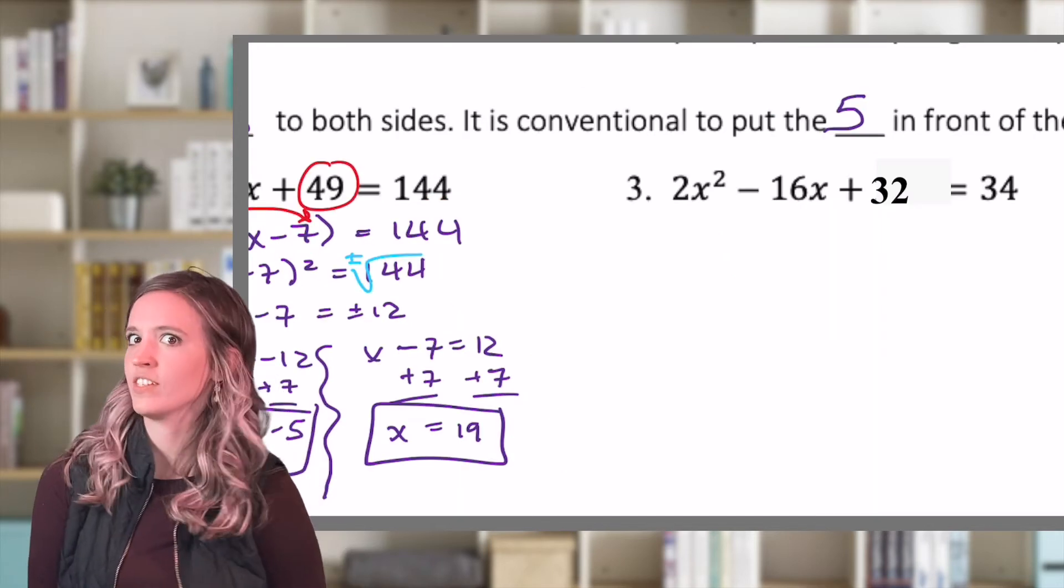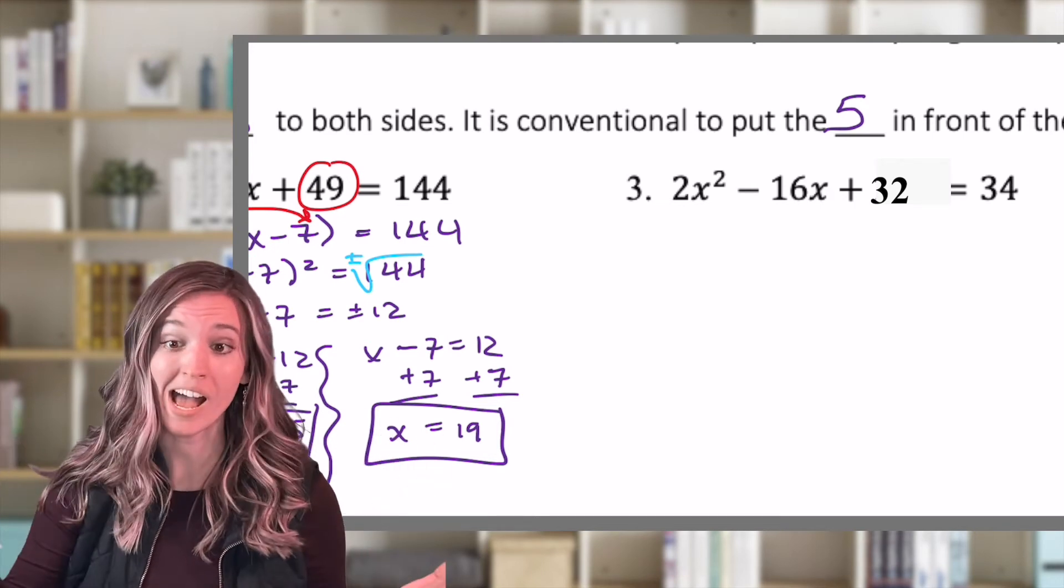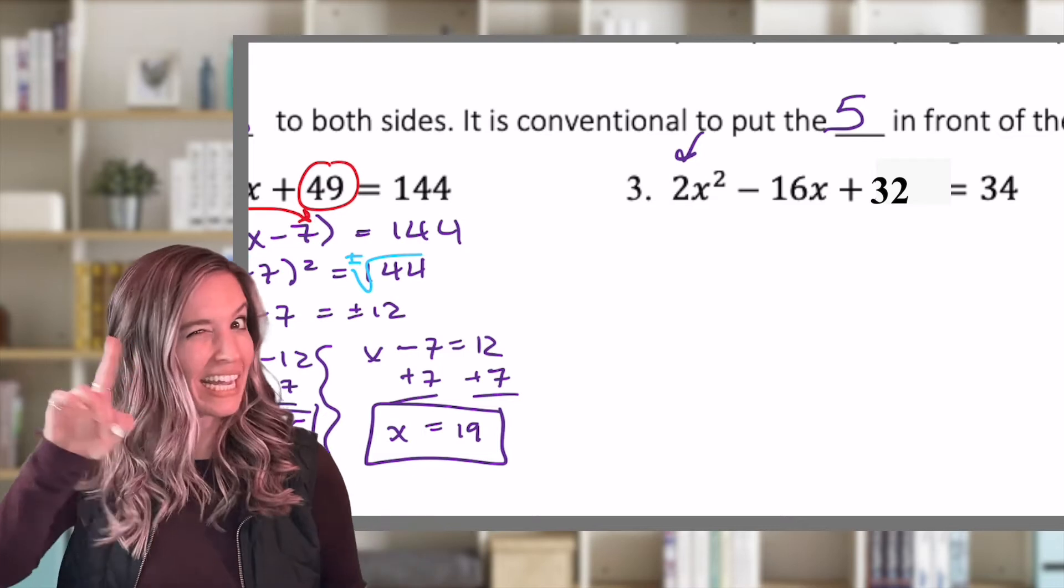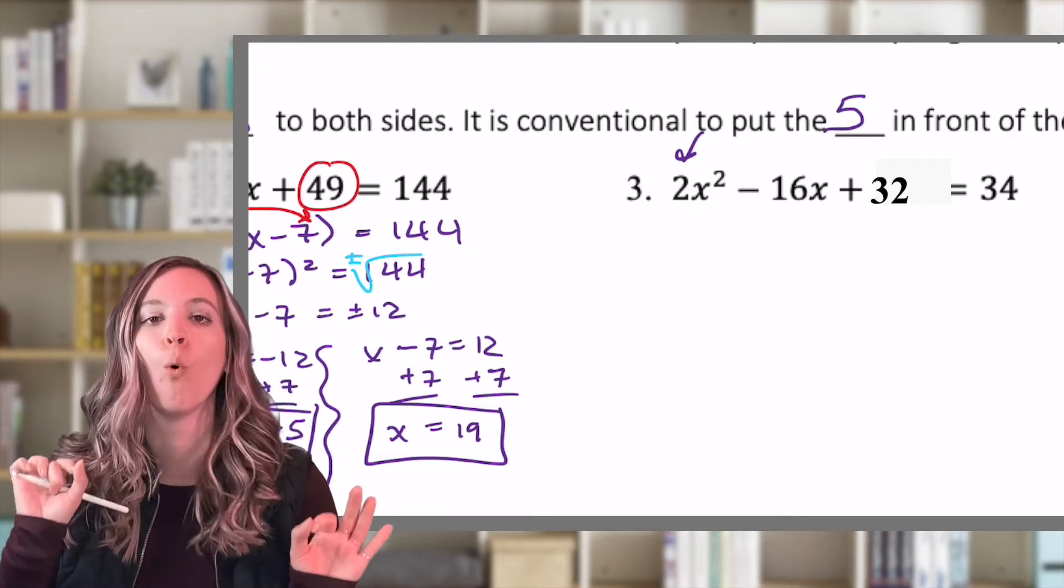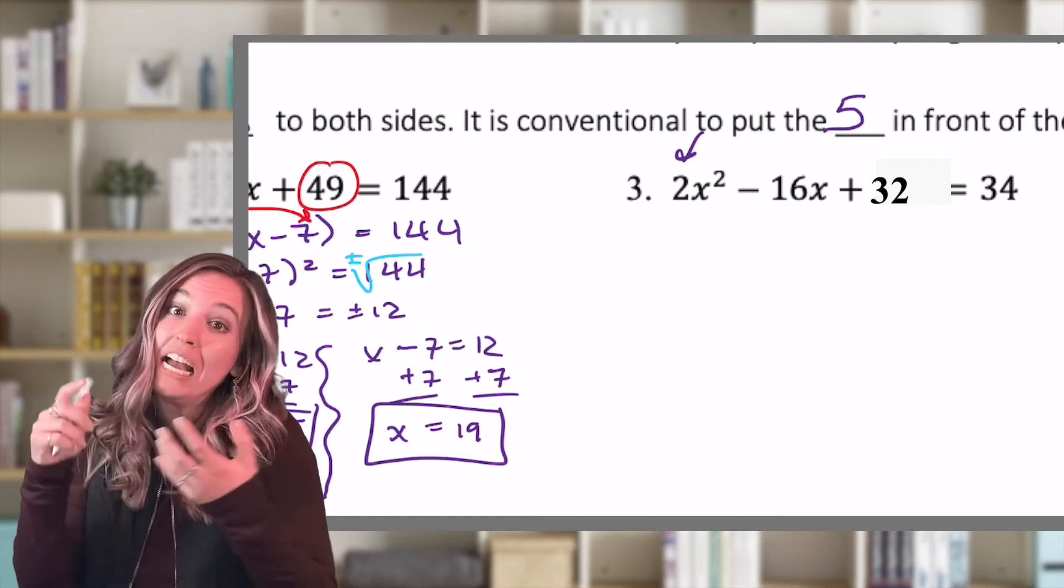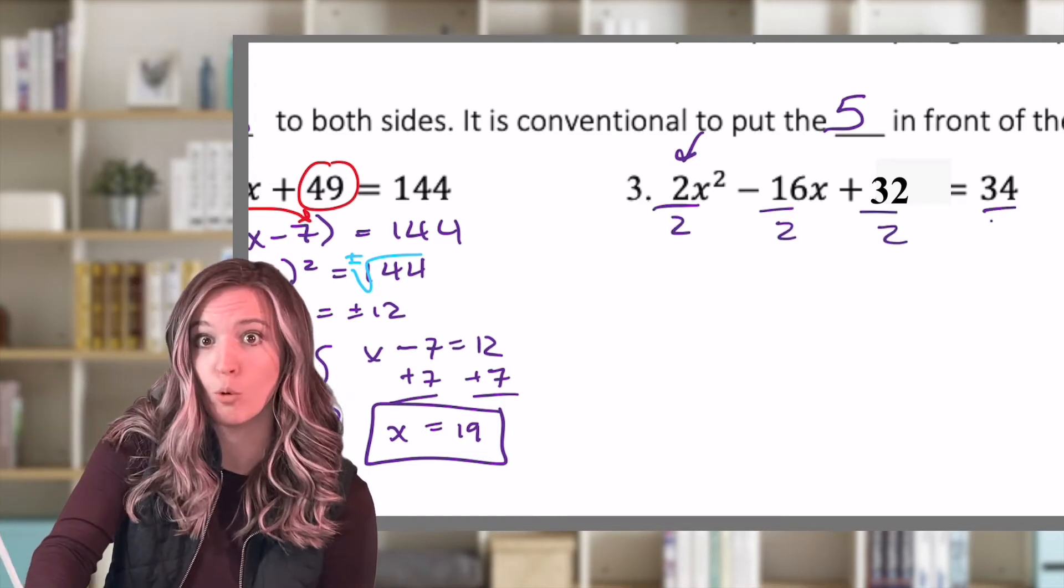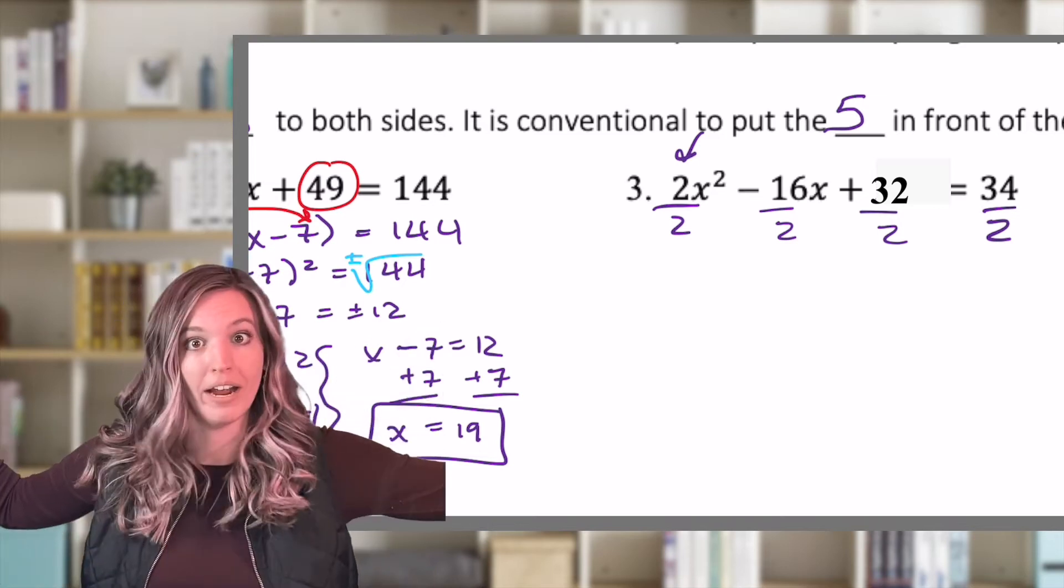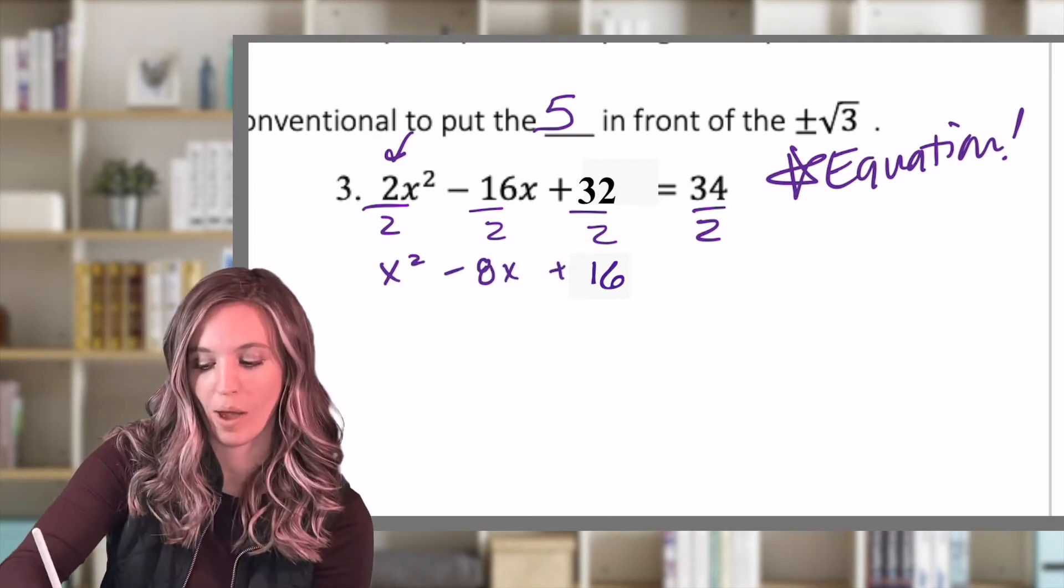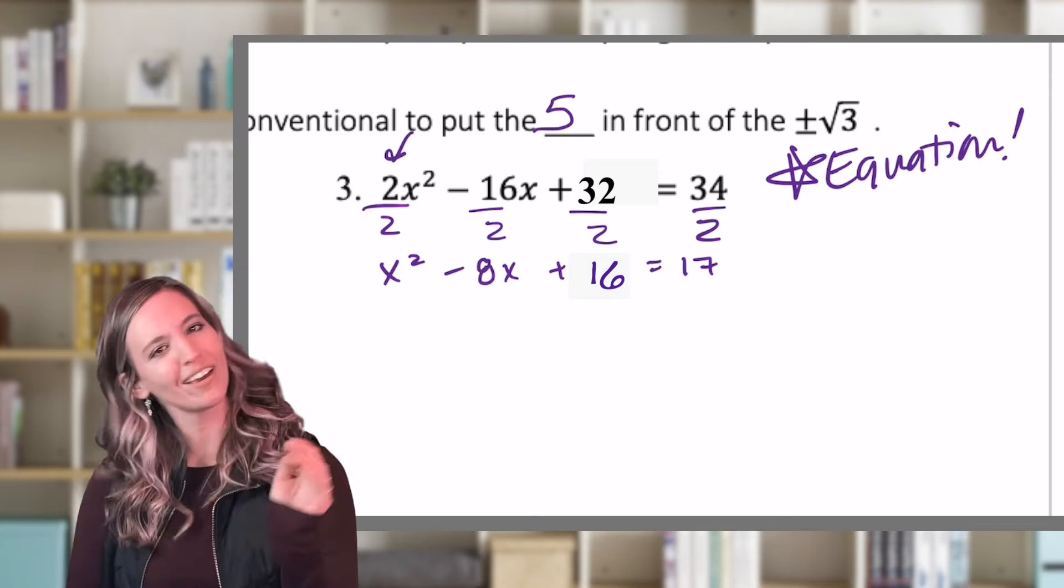All right, let's look at this next one. What's different about this one compared to the other two we've done? A is not one. I have this two out in front. So what could I do? Well, since this is an equation, it's a trinomial equals 34, technically, I'm allowed to divide everything by two. But I have to do it everywhere. You cannot, cannot do this with expressions. It has to be an equation. Now that a is one, you are ready to do this like the other two. Give it a go.